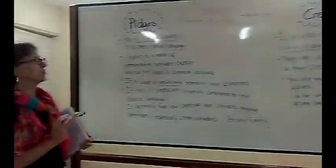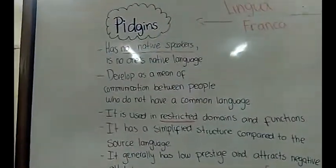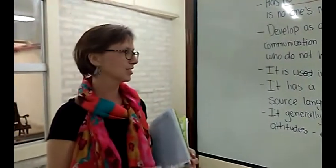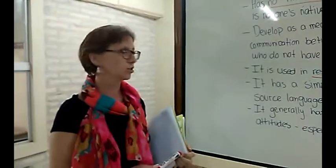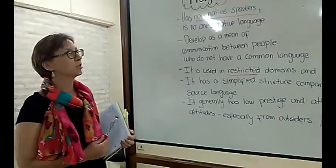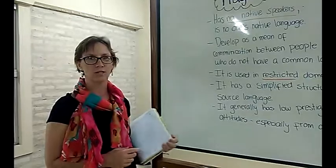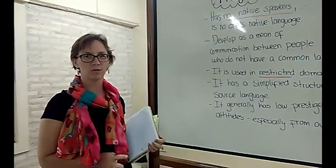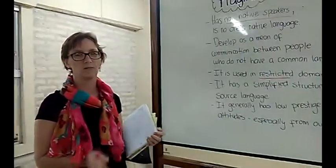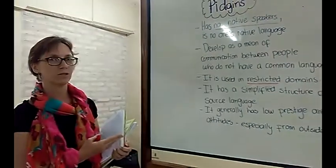We have two sub-divisions of lingua franca. The first one would be pidgin, and pidgin has no native speakers — it is no one's native language. It develops as a means of communication between people who do not have a common language. It is used in restricted domains and functions, and it has a simplified structure compared to the source language. It generally has low prestige and attracts negative attitudes, especially from outsiders, like broken English. One example for pidgin would be the Africans that were brought to work in the fields in the United States. They were from many different countries and had many different languages from many different tribes, so they had no language in common. But then they developed a language in common, which was pidgin, where they mixed all their languages and even mixed some English, and then they had a language in common with which they could communicate with each other.